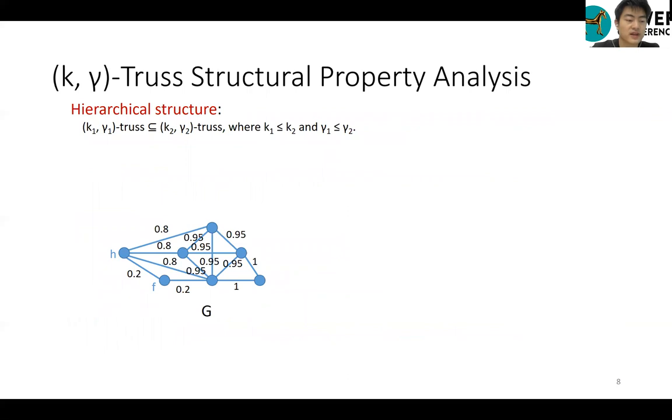Before introducing our index structure, we first introduce a useful hierarchical property of k-gamma-truths. k1-gamma1-truths is a subset of k2-gamma2-truths, where k1 is less than or equal to k2 and gamma1 is less than or equal to gamma2.